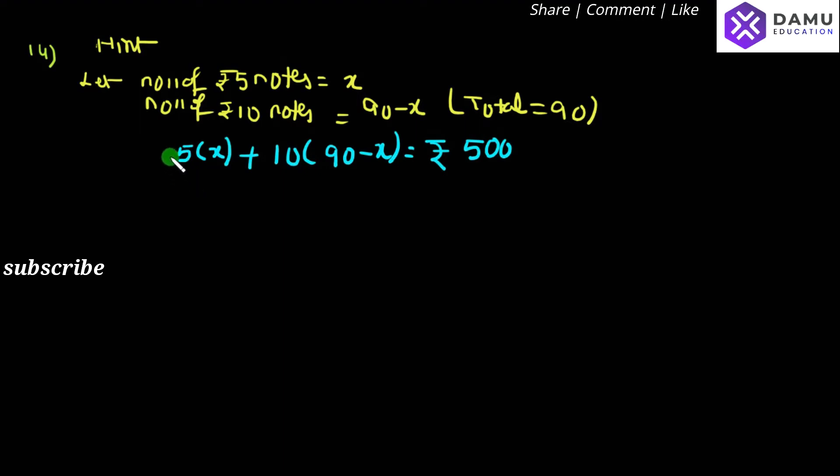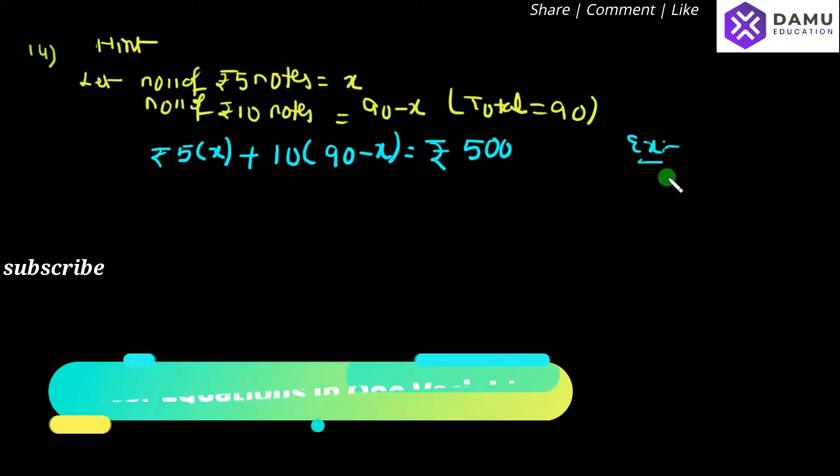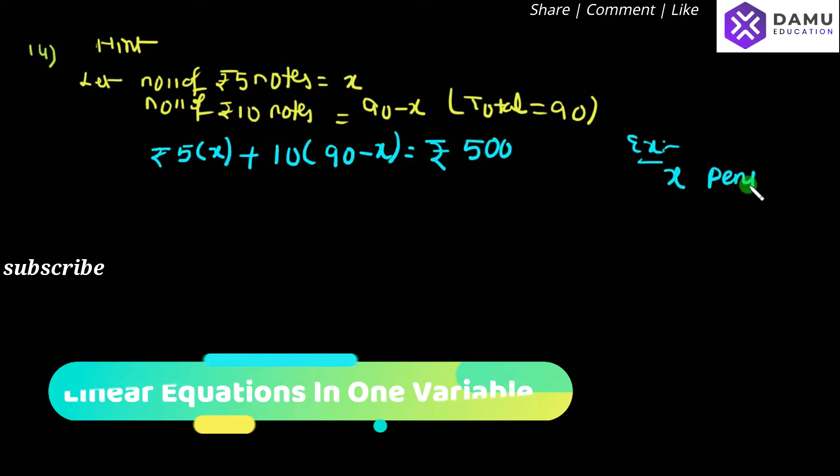So 5 times x means 5 rupees times the number. Let me take one example for you. Let's say there are x number of pens, and each pen costs 5 rupees. Then the total cost will be equal to 5 times the number of pens. So you get 5x, like that here also.